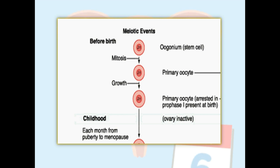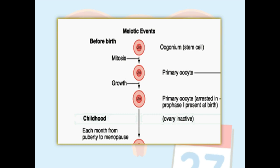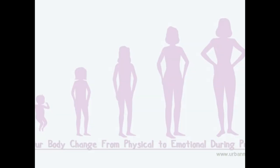This schematic diagram of oogenesis summarizes the whole process: oogonia divide mitotically and differentiate into primary oocytes, then primary oocytes undergo the first meiotic division but are arrested at prophase one. They remain arrested in this phase until a girl reaches puberty. During childhood, the ovary remains inactive — that is the end of phase one of oogenesis.